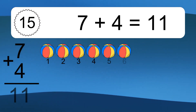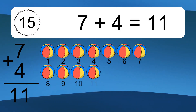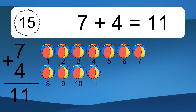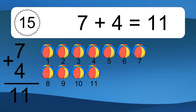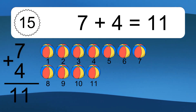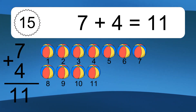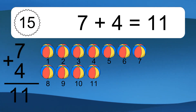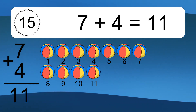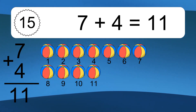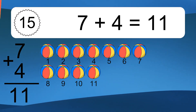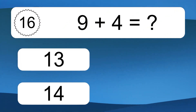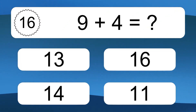7 plus 4 equals what? 7 plus 4 equals 11. Let's count it: 1, 2, 3, 4, 5, 6, 7, 8, 9, 10, 11.